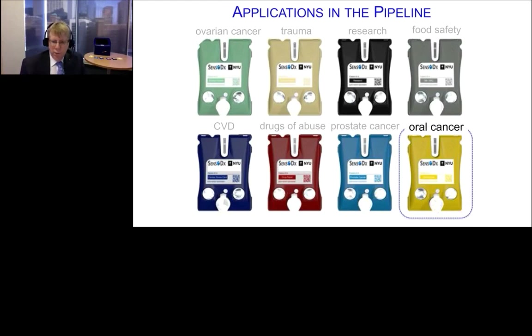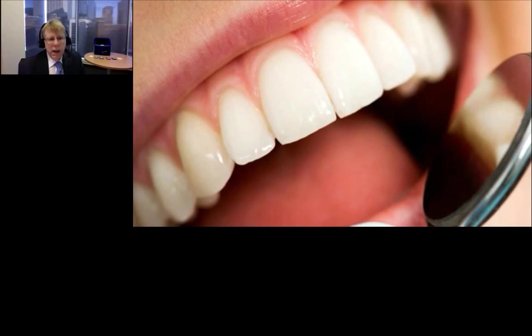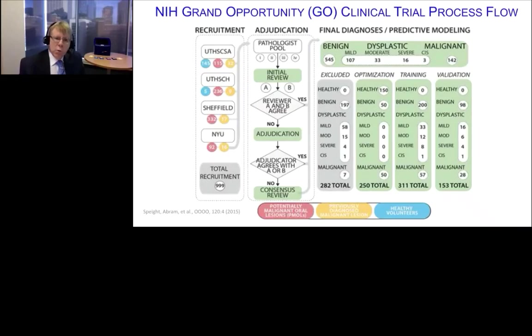Oral cancer is one of the most expensive of all cancers to treat, and it has one of the worst outcomes. Unfortunately, outcomes have not improved much over the last five decades. The good news is that when disease is caught early, outcomes are actually quite good. But we don't have an effective adjunct test to capture the disease early. So we needed to innovate and put together a new type of study — never done previously — to gather enough information to look across all diagnostic categories. With funding from a special NIH grand opportunity program, we created a one-of-a-kind trial.